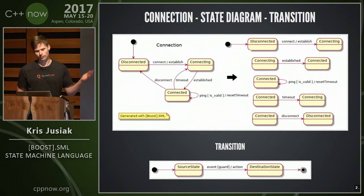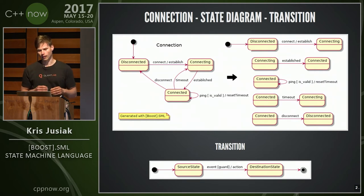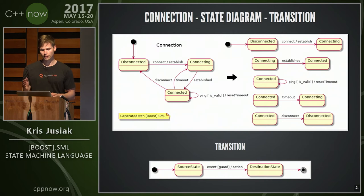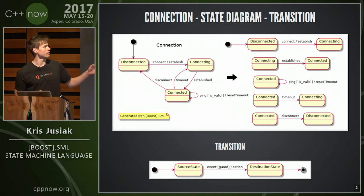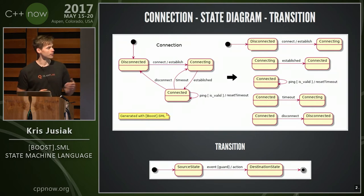When we look at that, we can look at it a bit differently. On the left side we have the same diagram — which, by the way, is generated by Boost.SML — but you can also think of it like on the right side, where you see all the transitions represented by source state, event, guard, action, and destination state. The left diagram and the right diagram are exactly the same.